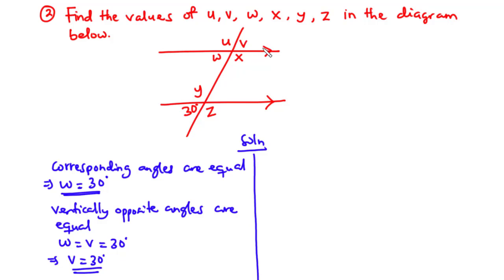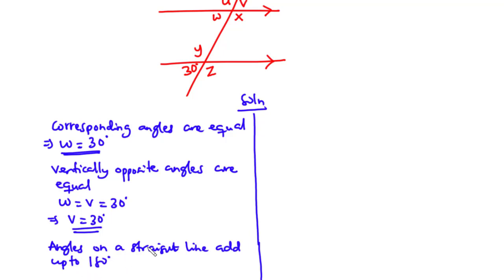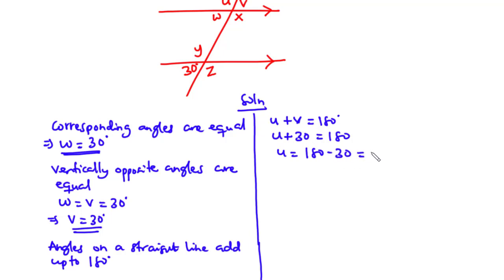Angles on a straight line add up to 180 degrees, so U plus V equals 180 degrees. Since V is 30 degrees, U plus 30 equals 180, and transposing gives U equals 150 degrees.